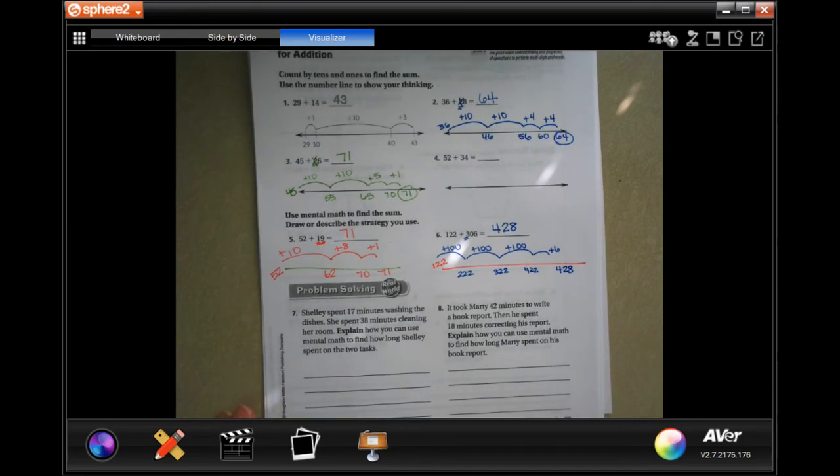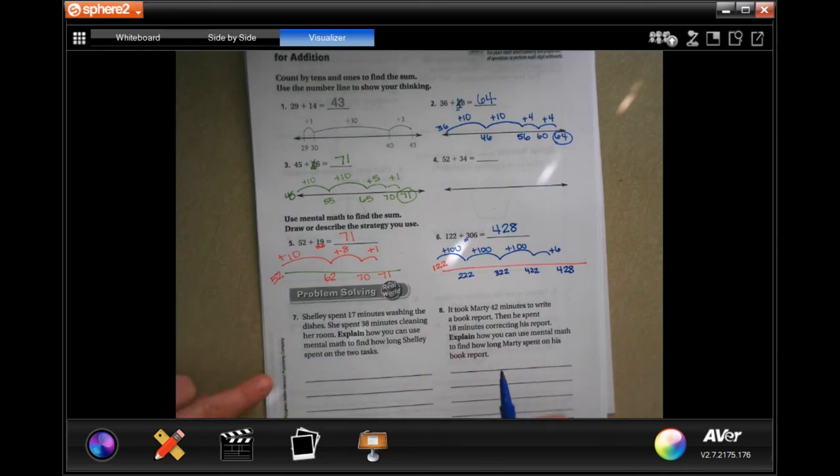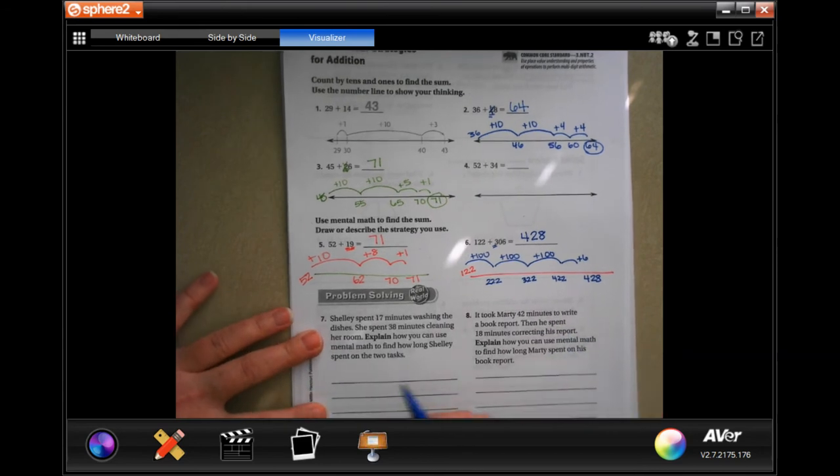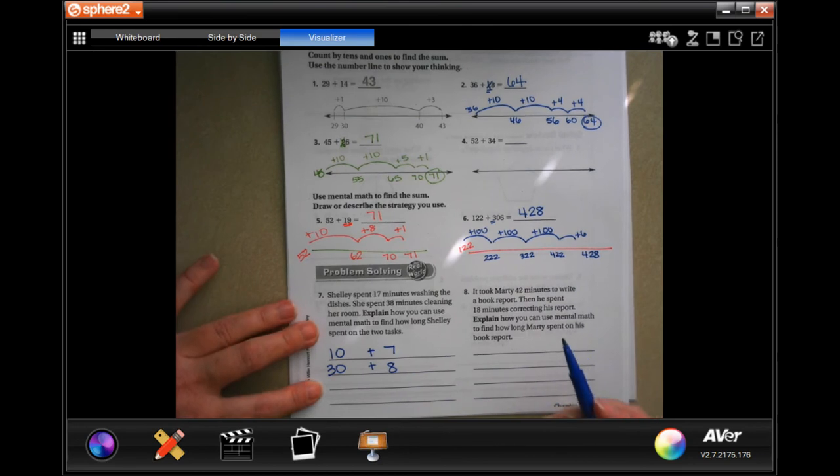So let's go down, we're going to do number seven, and it says Shelly spent 17 minutes washing the dishes. She spent 38 minutes cleaning her room. Explain how you can use mental math to find how long Shelly spent on the two tasks. So I'm going to do this a different way and show you. So 17 is 10 plus 7. 38 is 30 plus 8. I know it seems a little wonky, give me a minute.